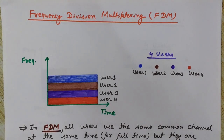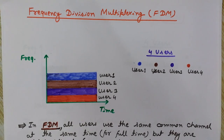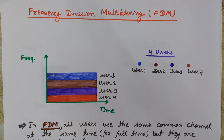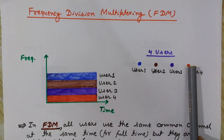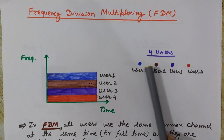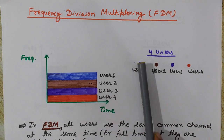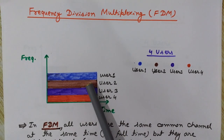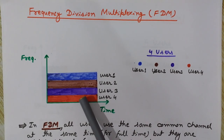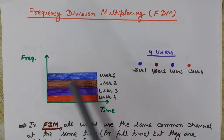First, we will see frequency division multiplexing (FDM). Suppose we have four users who want to transmit their signals over a common channel. These four users — user one, user two, user three, and user four — are indicated by different colors: blue, brown, and red for the fourth user.